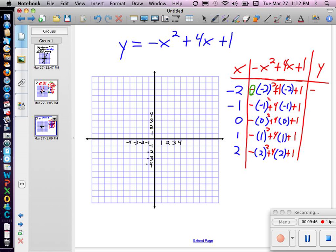Down here, we have negative 1 squared is 1. The opposite of that is negative 1, plus negative 4 is negative 5, plus 1 is negative 4. And then we have 0, plus 0, plus 1.